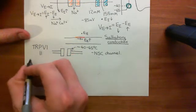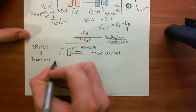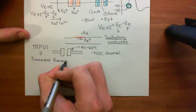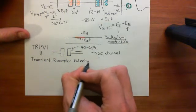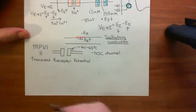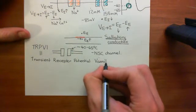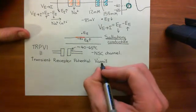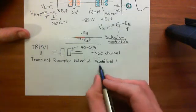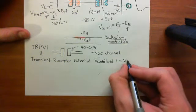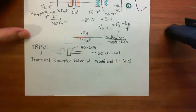TRPV1 stands for Transient Receptor Potential Vanilloid 1. Transient receptor potential is obvious — it produces a transient depolarization of the electrical potential difference across the cell membrane of the axon terminal. The V stands for vanilloid (with only one N). This channel actually used to be called the Vanilloid Receptor 1, so you might have seen it called VR1, but it has since been renamed Transient Receptor Potential Vanilloid 1.